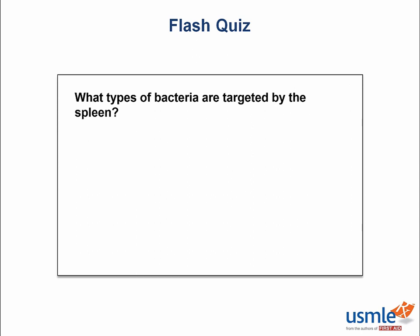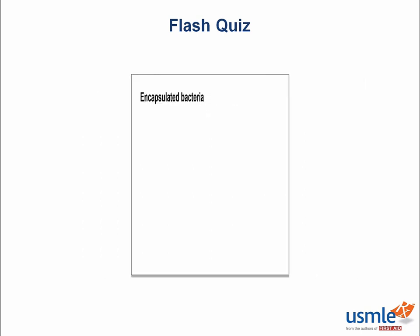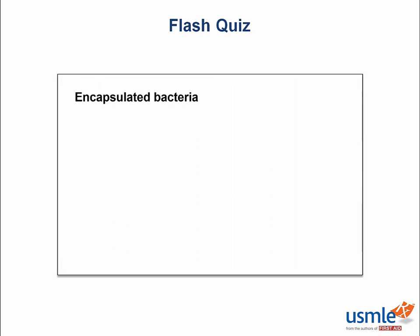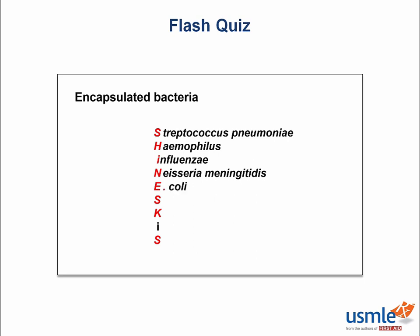Flash quiz time: What types of bacteria are targeted by the spleen? Encapsulated bacteria. You can remember them using the SHINE SKIES mnemonic, which stands for Strep pneumo, Haemophilus influenzae, Neisseria, E. coli, Salmonella, Klebsiella, and Strep agalactiae.